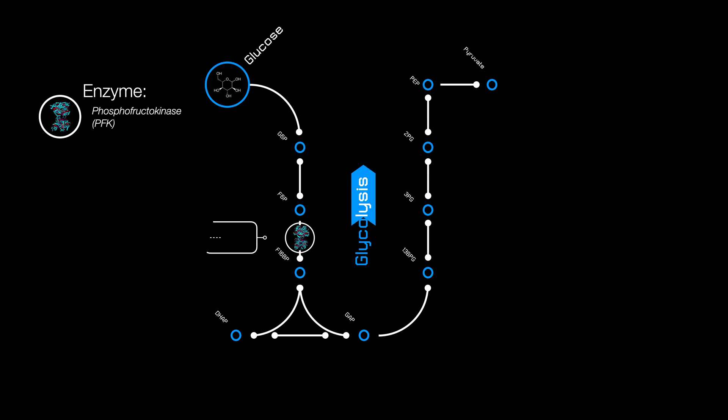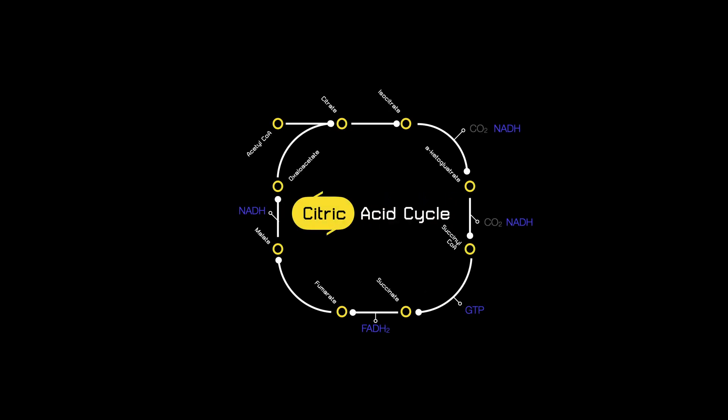It controls the speed by sensing the energy balance of the cell through the amount of ATP and various other molecules including citrate. The very same citrate behind the name citric acid cycle, also known as the Krebs cycle.